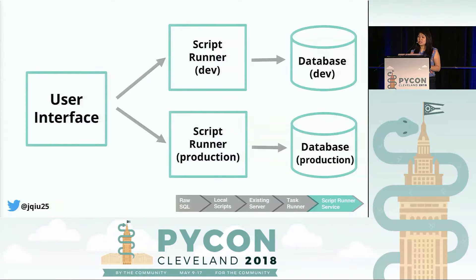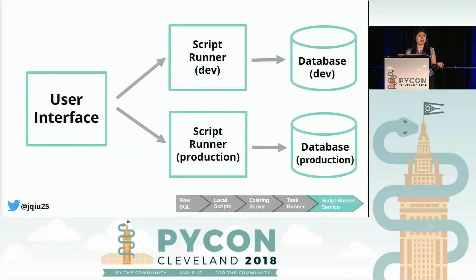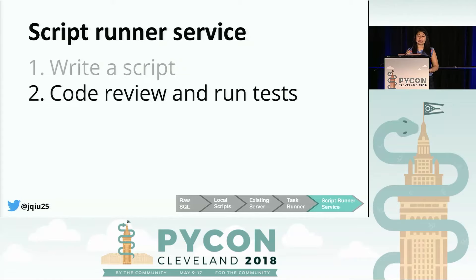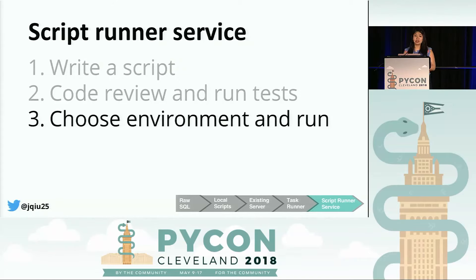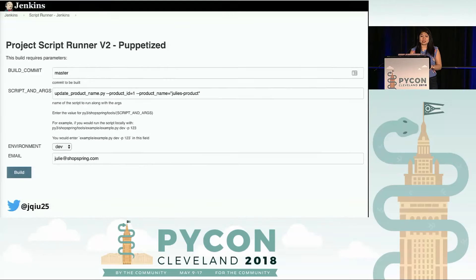Here's what that architecture looks like. We have an application server set up for each environment to run scripts. Each server has access to credentials common to all the other EC2 instances in its environment, and the application is set up to connect to the database in its respective environment. The steps for running a script are similar to the task runner — write the script, get it into the repository — but the key difference is that the user no longer needs to input a series of command line arguments. They just select the environment they want to run the script in and go.